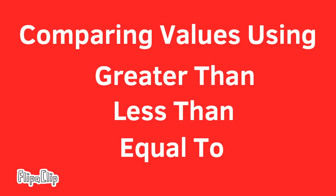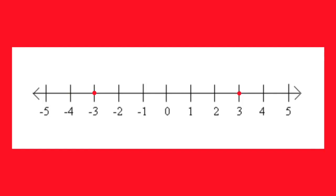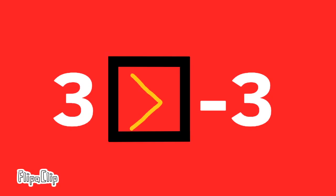This is a lesson in comparing values, using greater than, less than, and equal to signs. 3 compared to negative 3. On the number line, positive 3 is to the right of negative 3, and that makes positive 3 greater than negative 3. Reading from left to right, 3 is greater than negative 3. From right to left, negative 3 is less than 3.